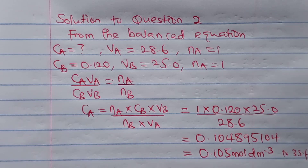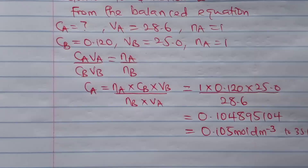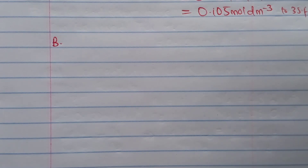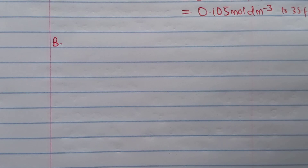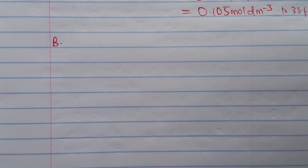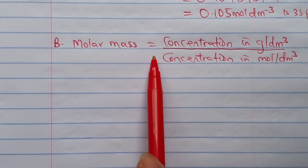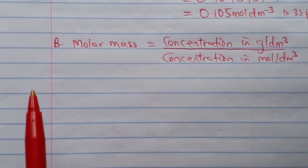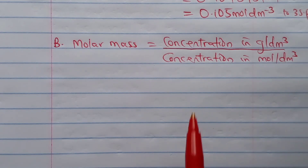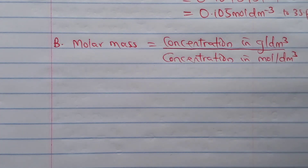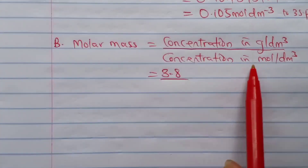The second part asks us to calculate the relative molar mass of A. From the question, the concentration in grams per dm³ of solution A is 3.8 grams, and we have obtained the concentration in moles per dm³ as 0.105. Joining them together using molar mass = mass concentration / molar concentration, and inserting all values, dividing 3.8 by 0.105 gives us the molar mass, which we leave to three significant figures.